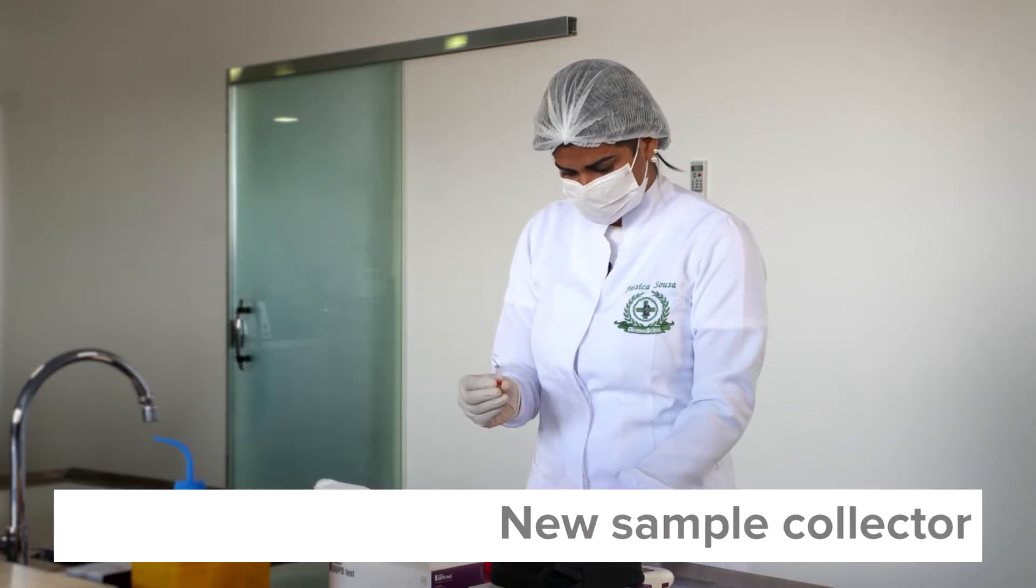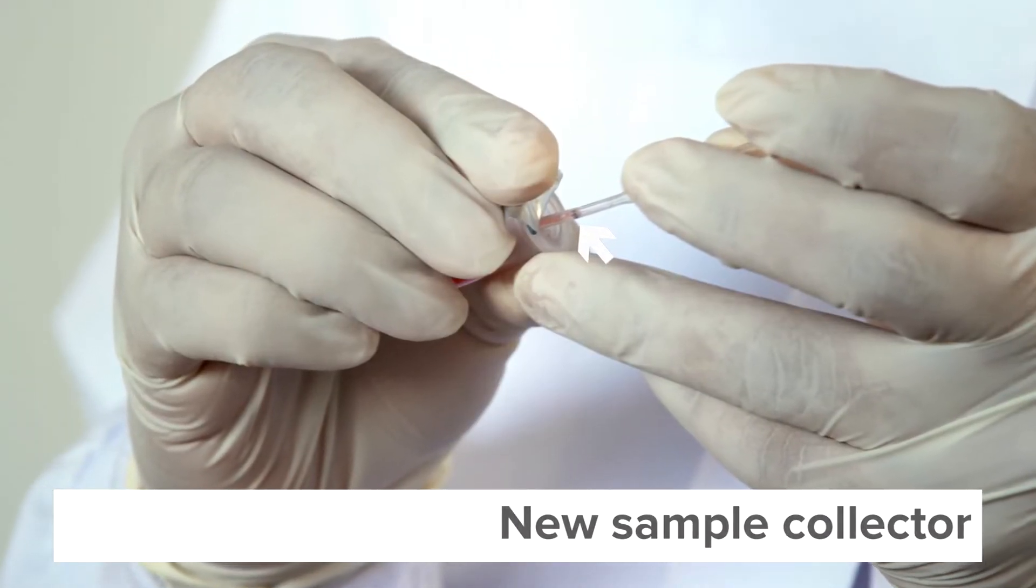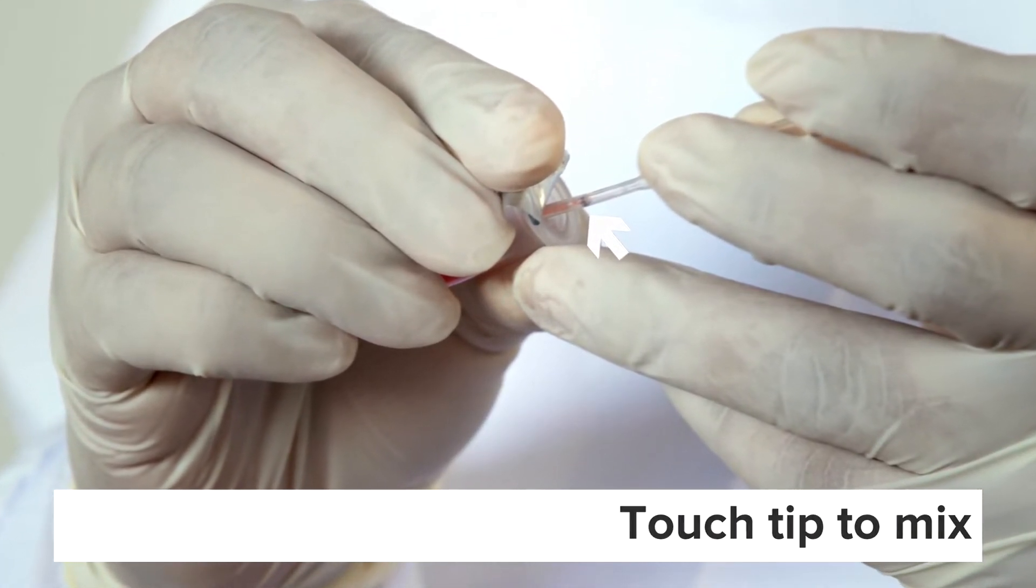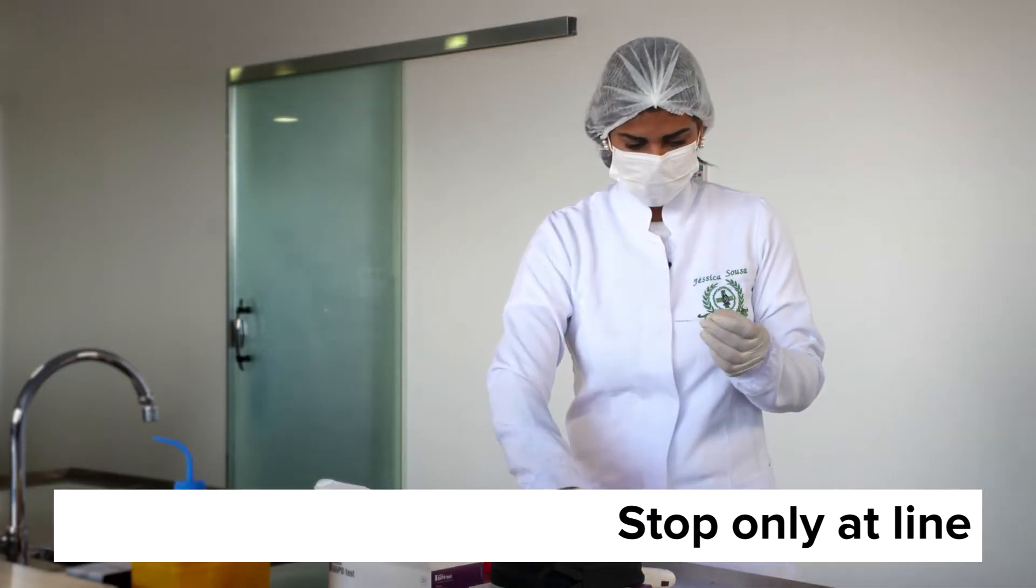Take a new sample collector, hold it by the stem at a 25 to 30 degree angle and touch the tip to the mixed specimen. It will automatically fill to the black line. Stop only when it reaches the line. It's important to get the right amount of mix.